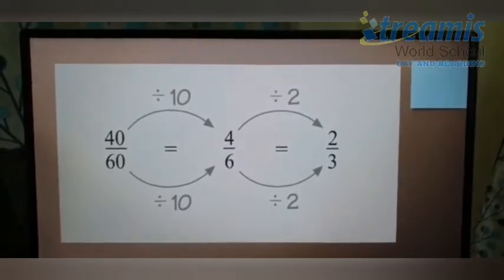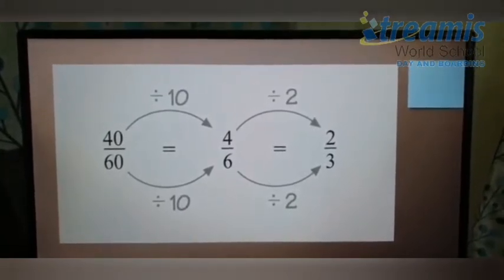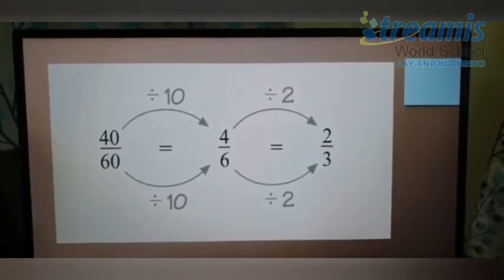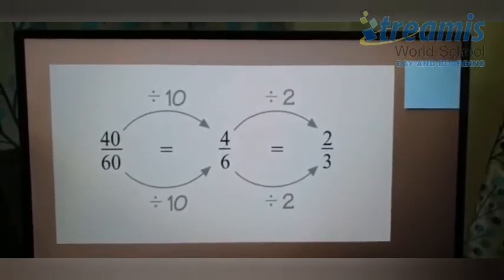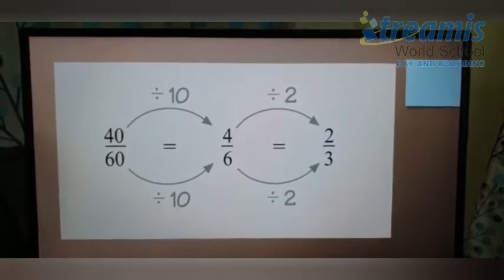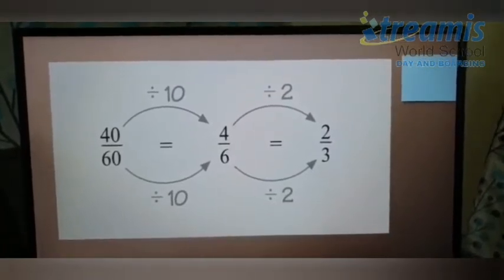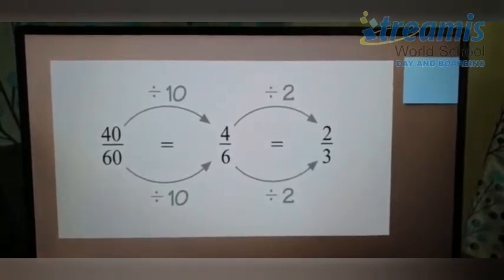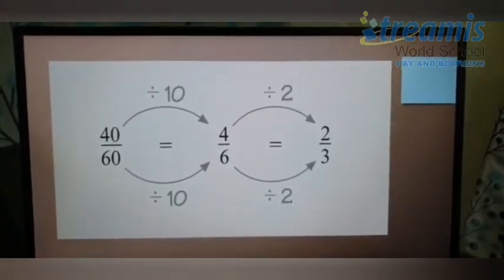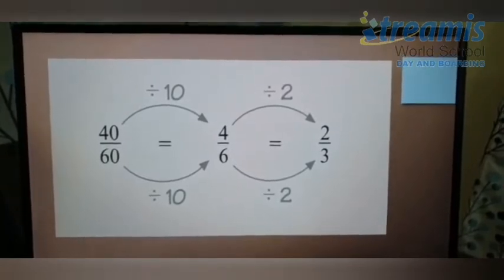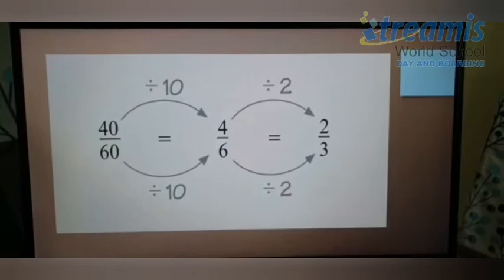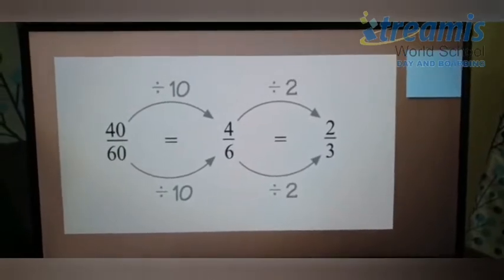But still, this 4/6 is not in the simplest form or the lowest form. So I divided 4 by 6 again by 2. Yes, and now I got the fraction that is 2/3. Yes, 2/3 is now as in the lowest form, is in the reduced form or you can say it is in the simplest form. So 2/3 is the simplified fraction for 40/60.